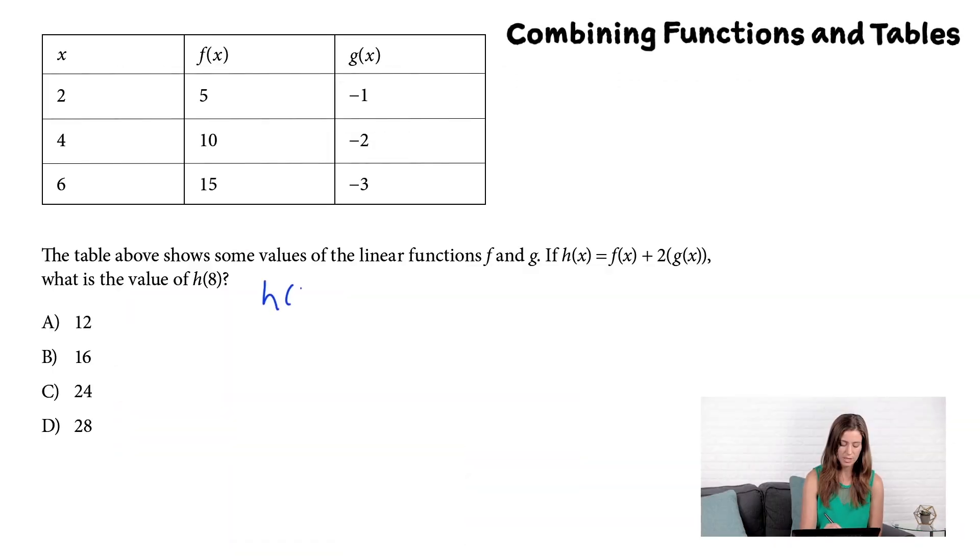To find h of 8, I'm going to need the values of both f and g of 8, like this. h of 8 is going to equal f of 8 plus 2 times g of 8.